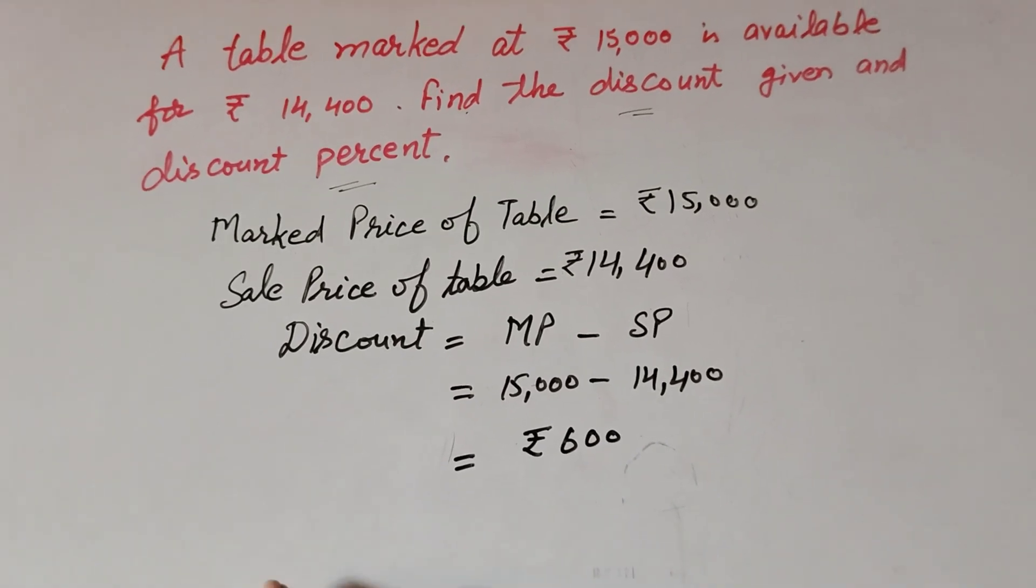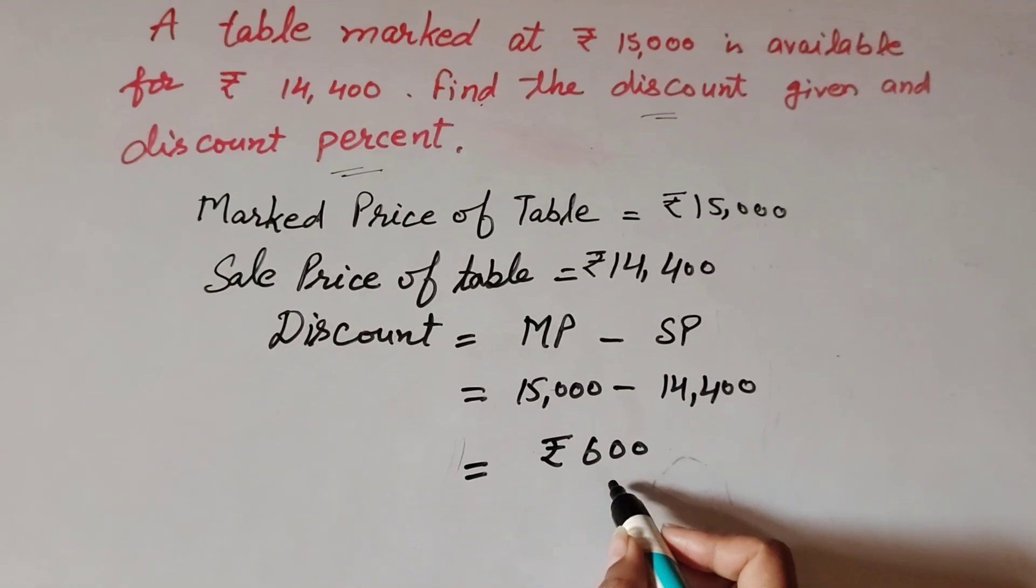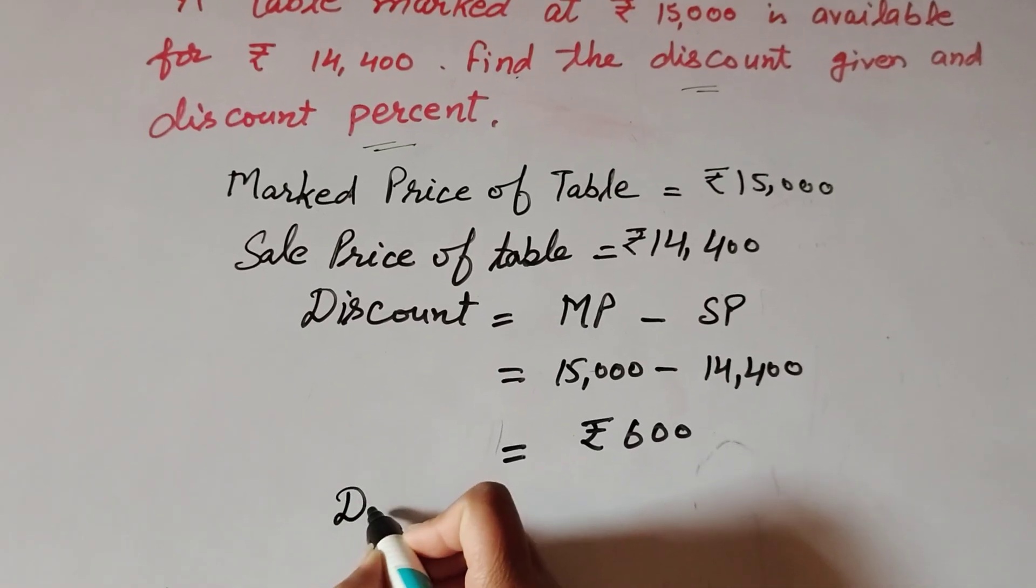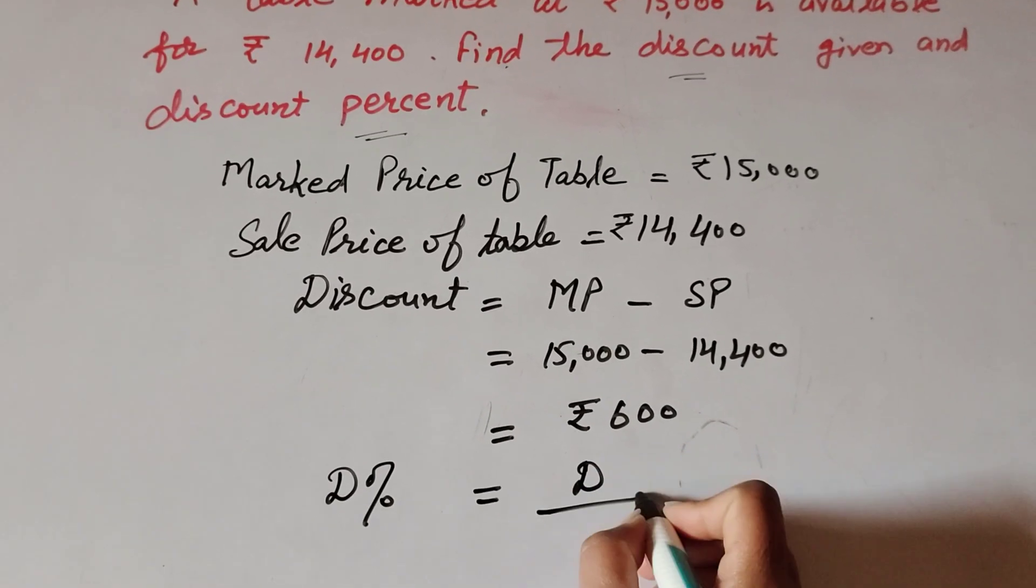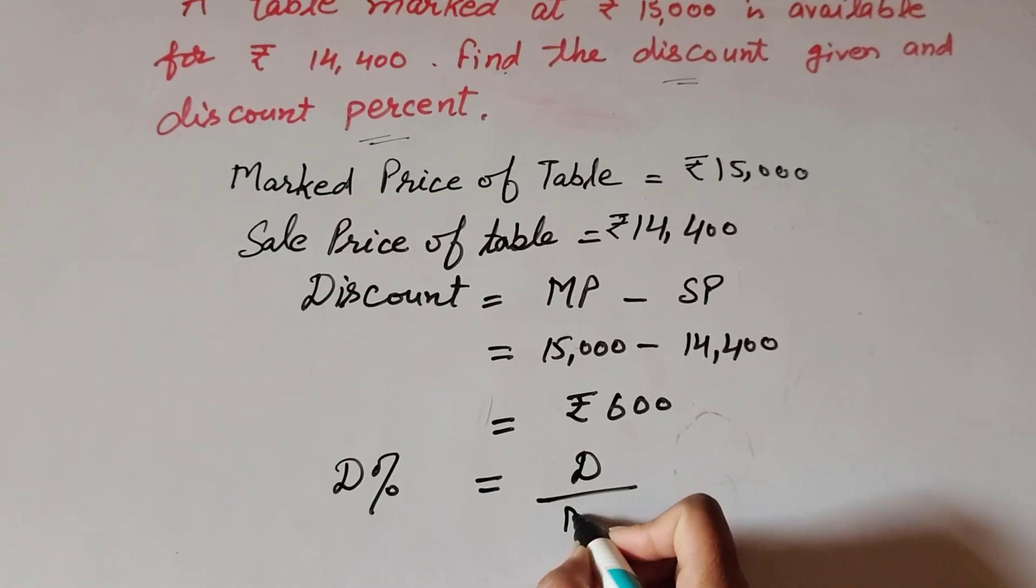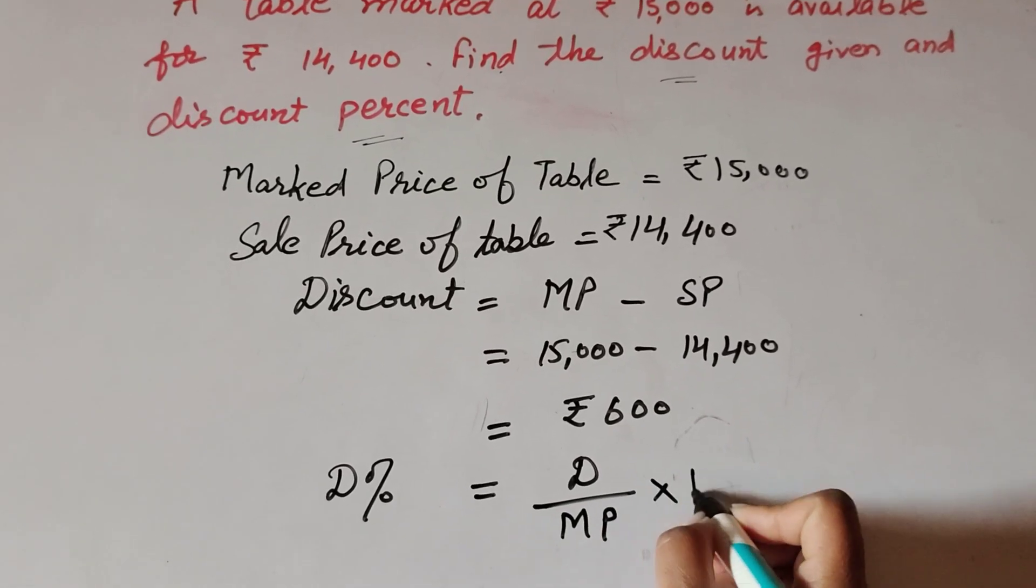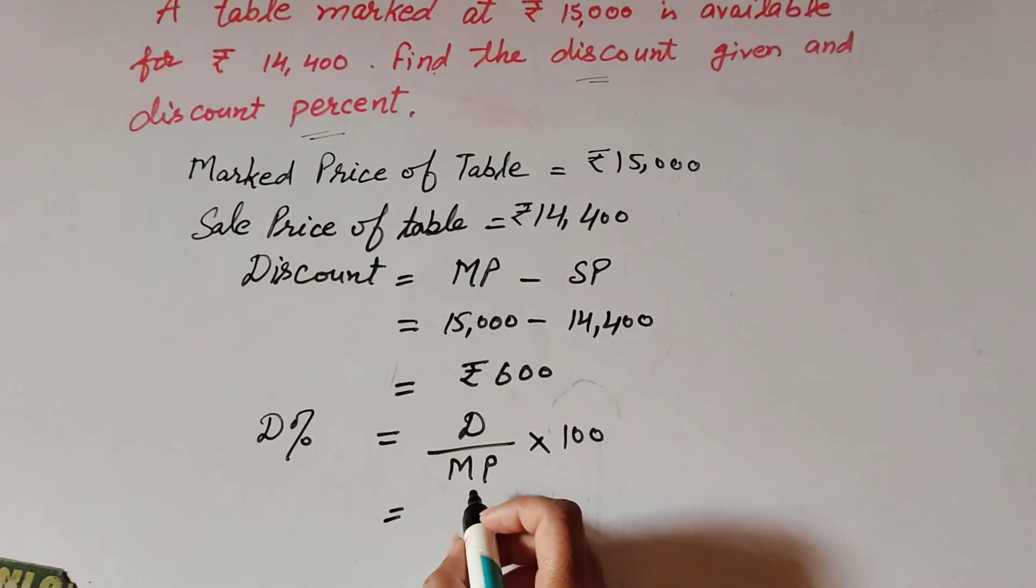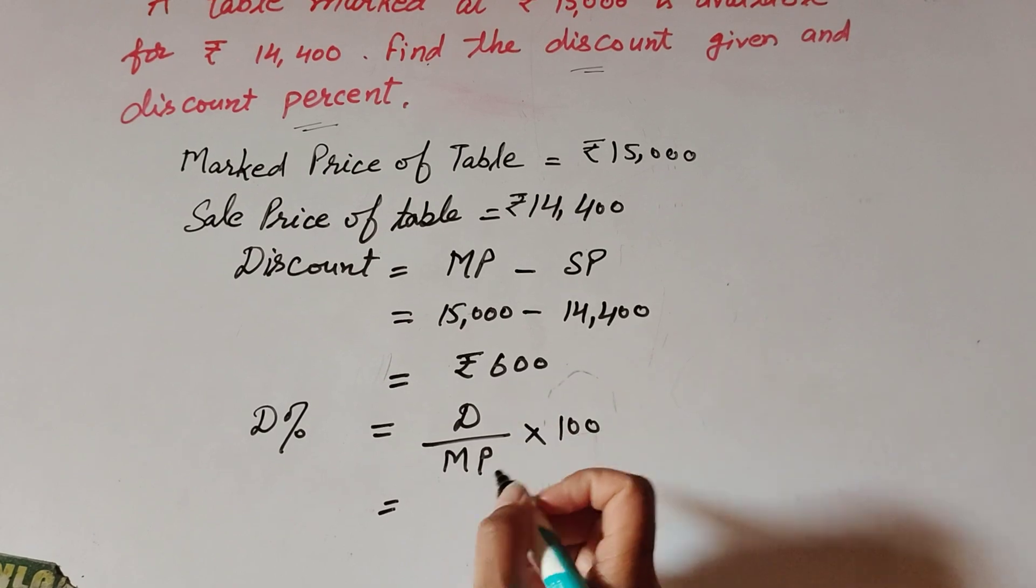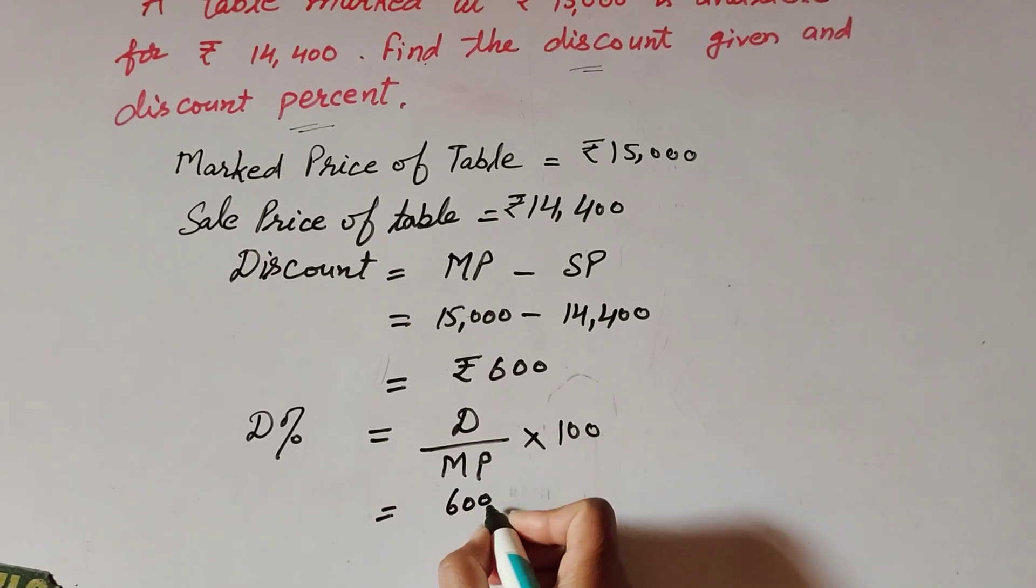So now we find discount percentage. Discount percentage, it is equal to discount over marked price multiply by 100. So in this, discount is ₹600. Marked price is ₹15,000, multiply by 100.